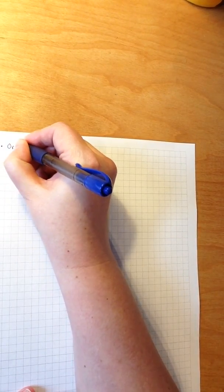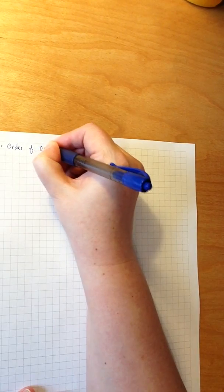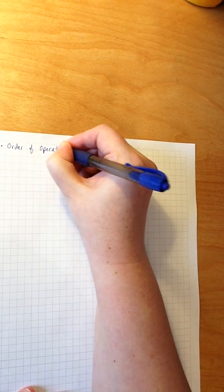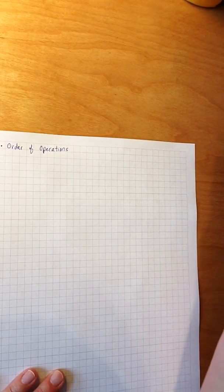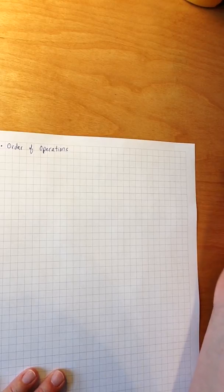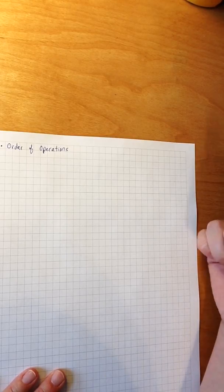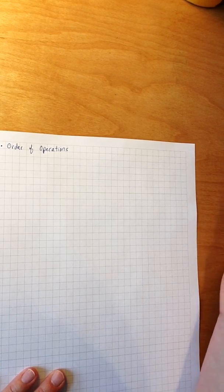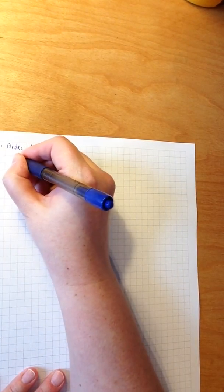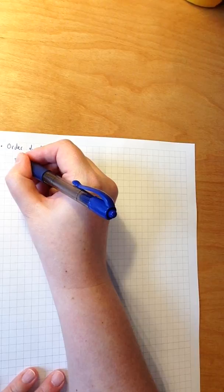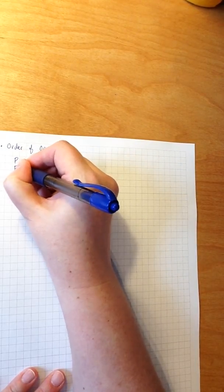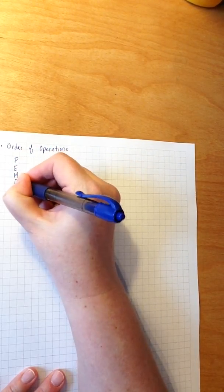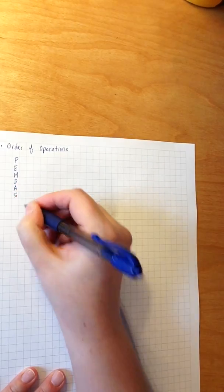Order of operations. Mathematicians decided at some point that they needed an agreed-upon order in which to simplify expressions. That way, regardless of who was doing the simplification, everyone would get the same answer. We have an acronym for this process, which we call PEMDAS.